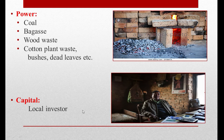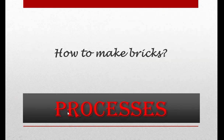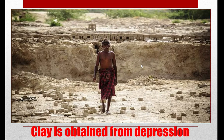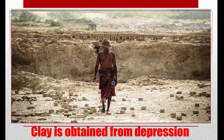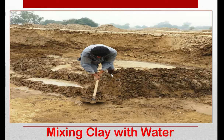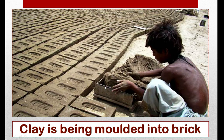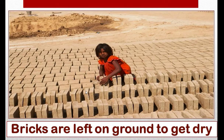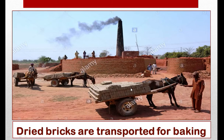In this segment you will see how bricks are manufactured. In the background of this worker, you can see there is a depression where clay has been obtained. The clay is mixed with water, then molded into bricks using a mold. The bricks are left on the ground to dry under sunlight. The dried bricks are then transported into the kiln.